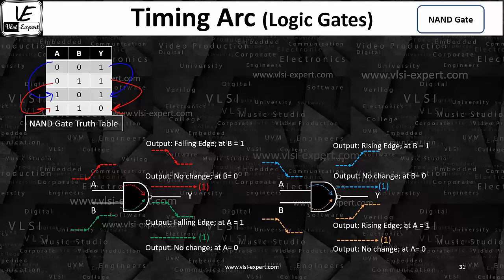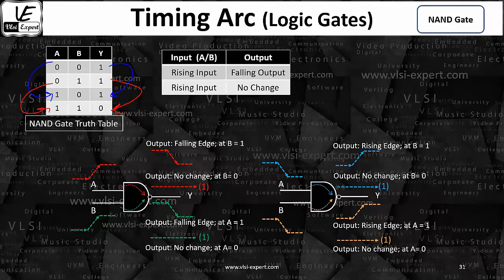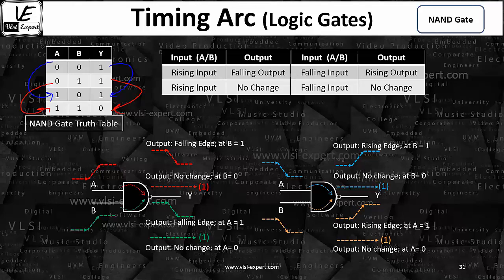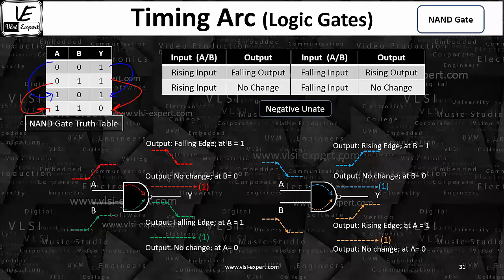So I can summarize: at the input, if you give a rising input you will get the falling output or no change; if you give a falling input you will get the rising output or no change. This is just the opposite behavior from what we saw in the AND gate and OR gate. Here your output is not following the input — your output is the opposite of your input. It is a negative side.